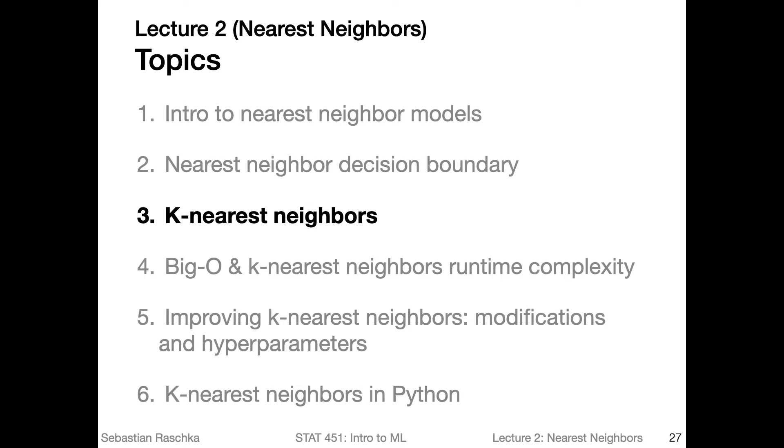I just want to make a quick addendum. In the previous video on distance metrics, not all of the distance measures we discussed are proper metrics. For example, the cosine similarity is not a proper metric because it doesn't satisfy the triangle inequality.